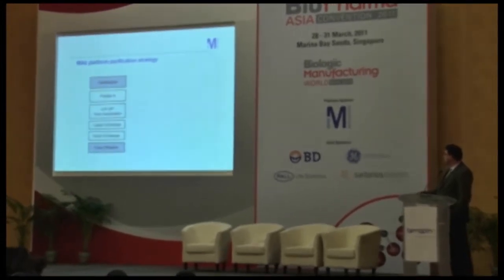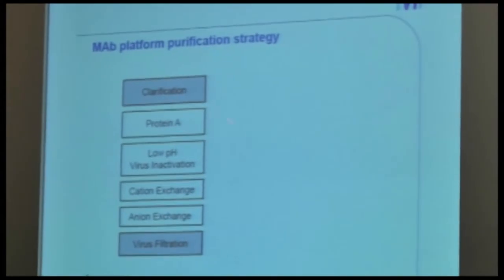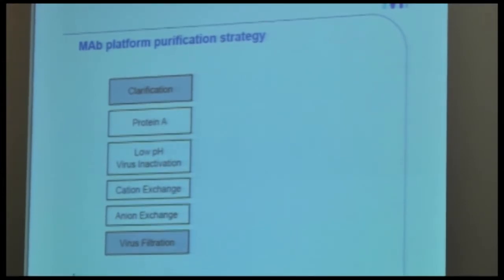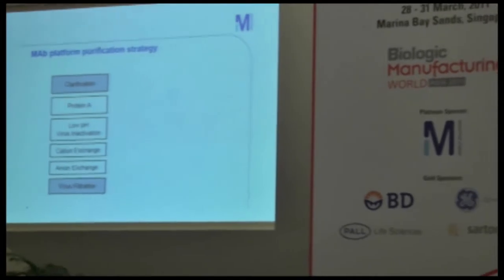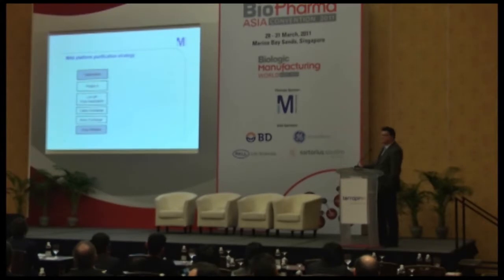We will discuss this on a standard monoclonal antibody platform purification strategy: clarified feed stream, protein A for monoclonal antibody capture, low pH virus inactivation, cation exchange for intermediate purification and the removal of leaked protein A and DNA, anion exchange in flow-through mode to remove trace impurities, followed by virus filtration. We are going to talk here about the chromatography steps highlighted in blue.